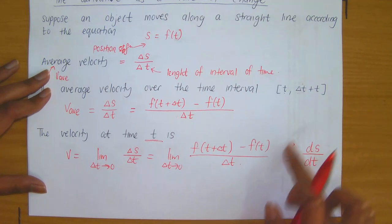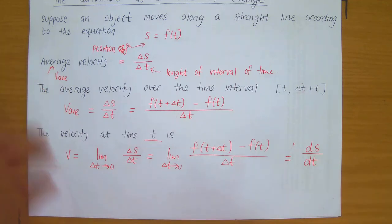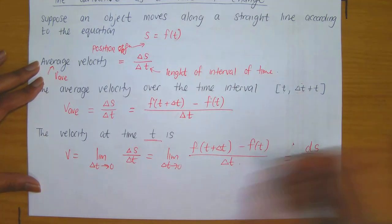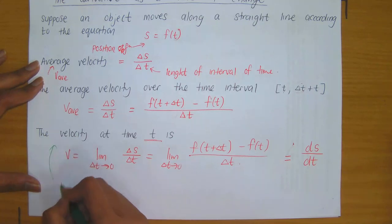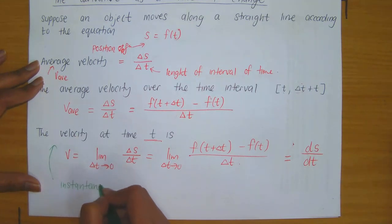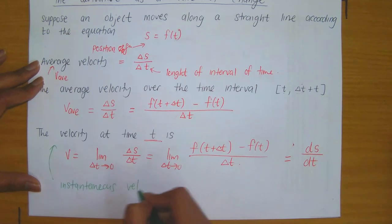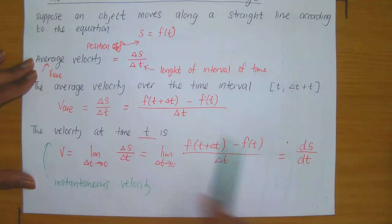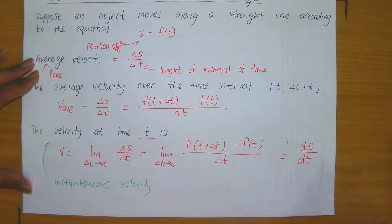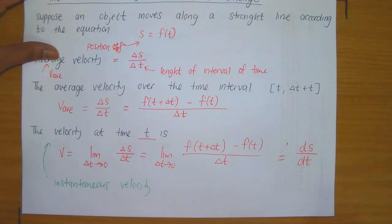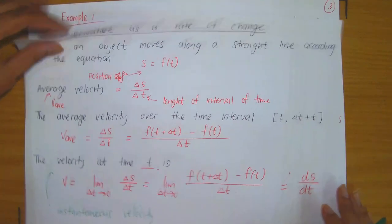Observe that velocity at time T, based on this definition, simply equals the derivative of the position function with respect to T. So essentially, whenever you want to find instantaneous velocity — velocity at time T is referred to as the instantaneous velocity — it amounts to computing the derivative of your position function and then evaluating at time T, where you're computing the derivative of the position function with respect to T.